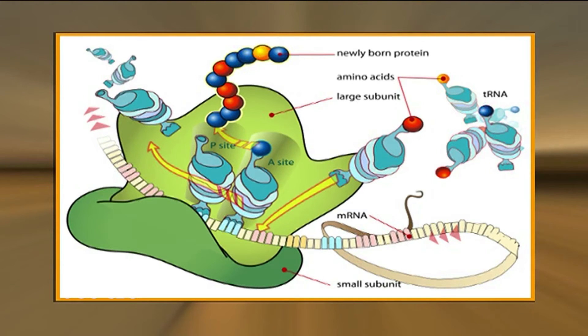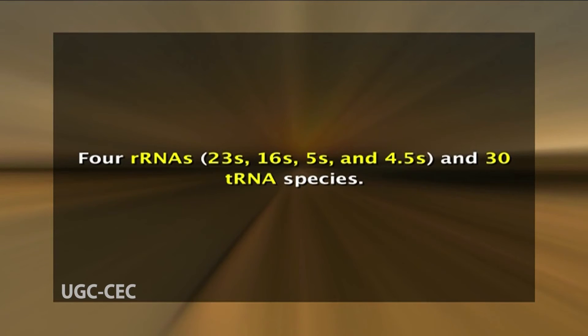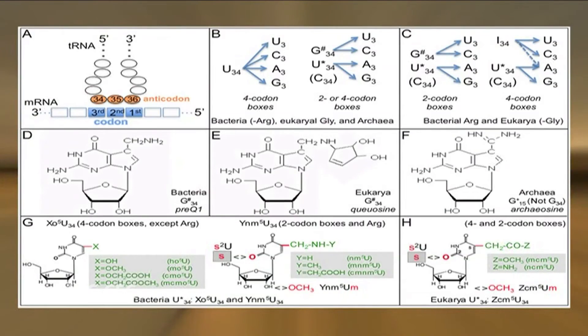These chloroplast genes encode both RNAs and proteins involved in gene expression, as well as a variety of proteins that function in photosynthesis. Both the ribosomal and transfer RNAs used for translation of chloroplast mRNAs are encoded by the organelle genome. These include 4 rRNAs — 23S, 16S, 5S, and 4.5S — and 30 tRNA species. In contrast to the smaller number of tRNAs encoded by the mitochondrial genome, the chloroplast tRNAs are sufficient to translate all the mRNA codons according to the universal genetic code.